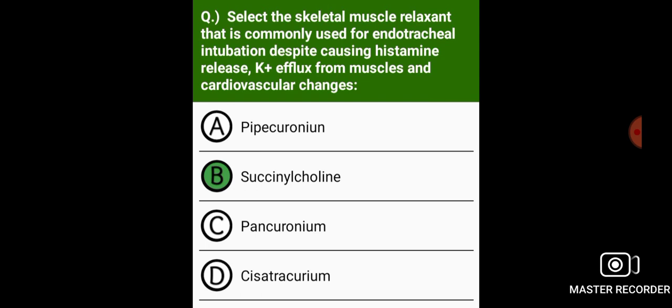Select the skeletal muscle relaxant that is commonly used for endotracheal intubation, despite causing histamine release, potassium efflux from muscles, and cardiovascular changes. The answer is succinylcholine.